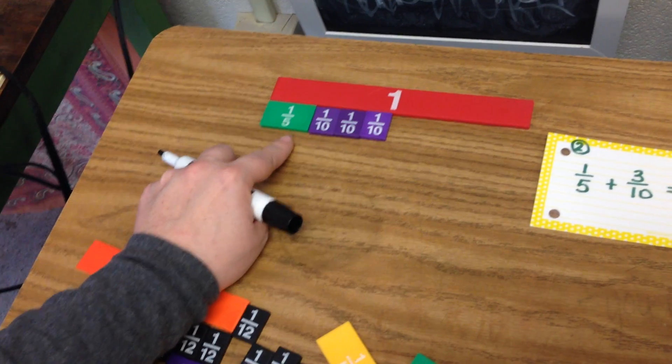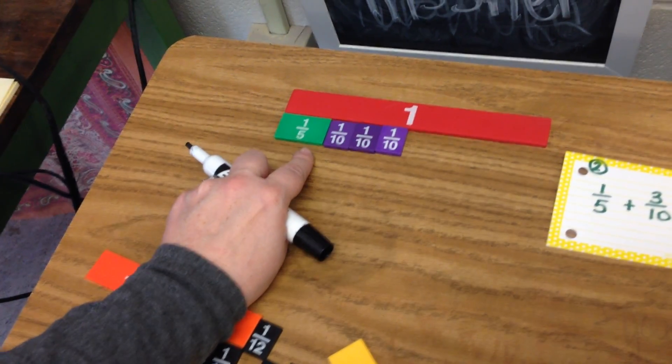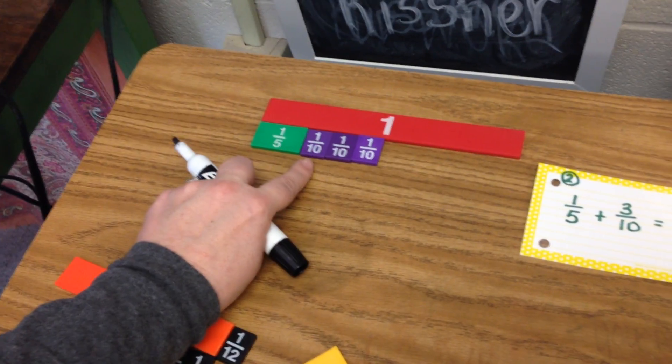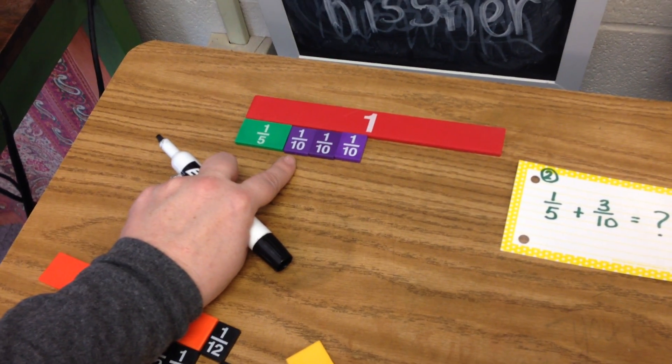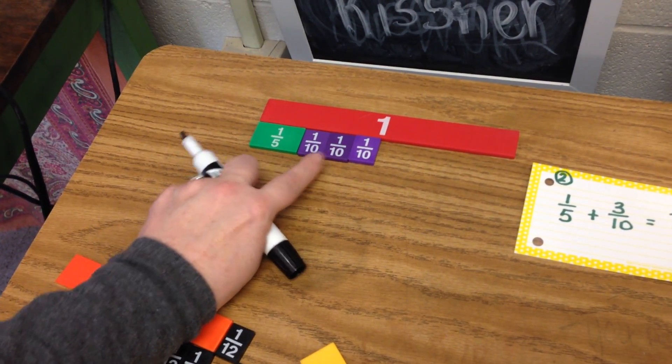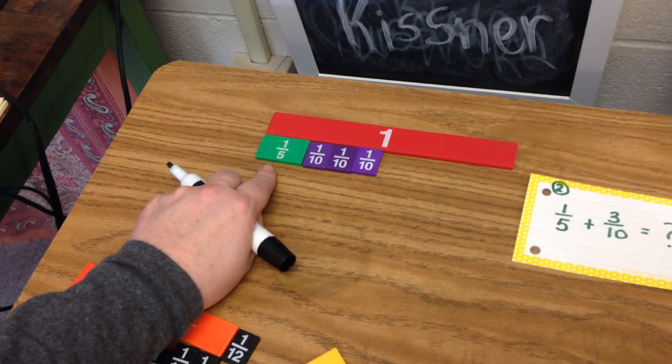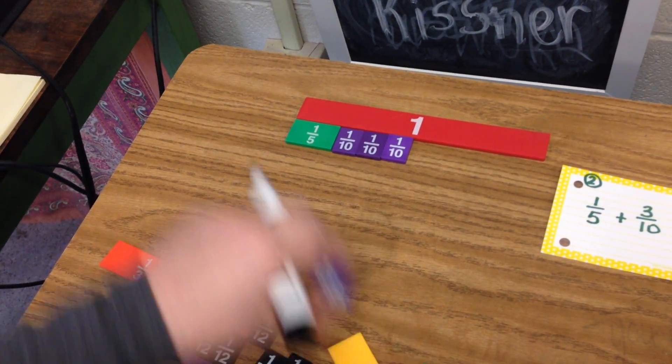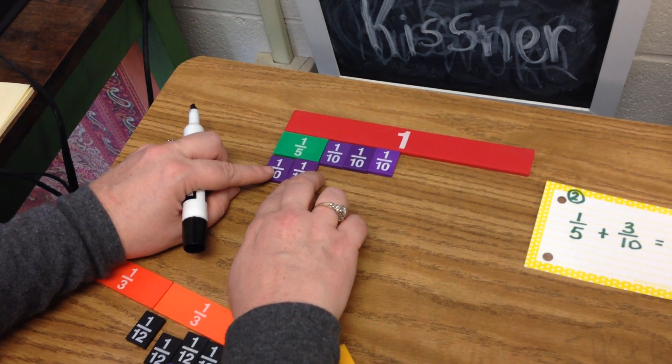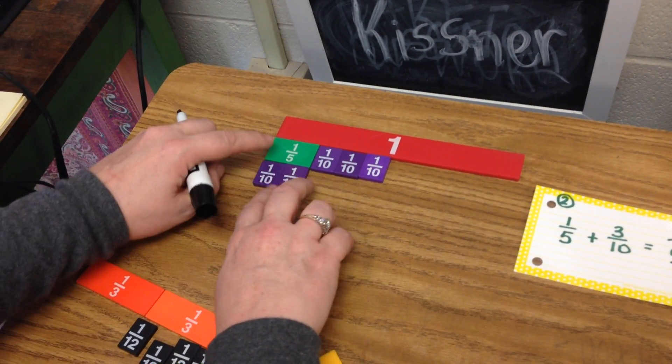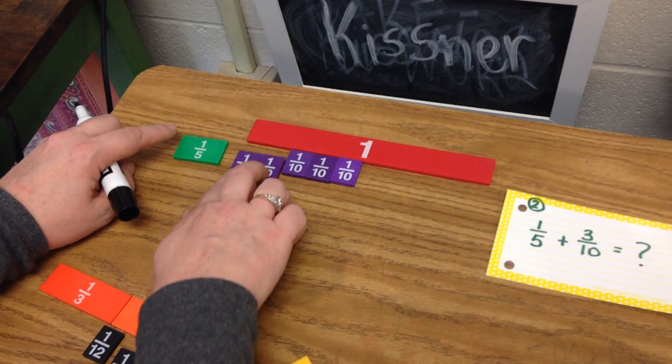Now this time, we look at your two denominators. We have fifths and we have tenths. Can five go into ten evenly? In this case, the answer is yes. So I don't need to rename the three-tenths. I only need to rename the one-fifth. So what I'll do is replace one-fifth with two-tenths.